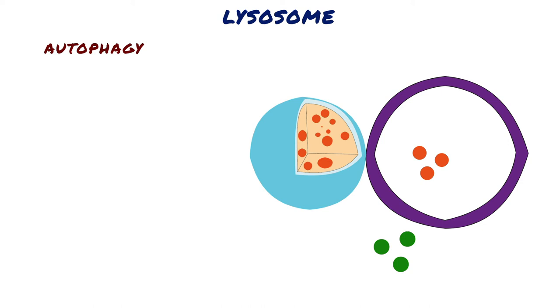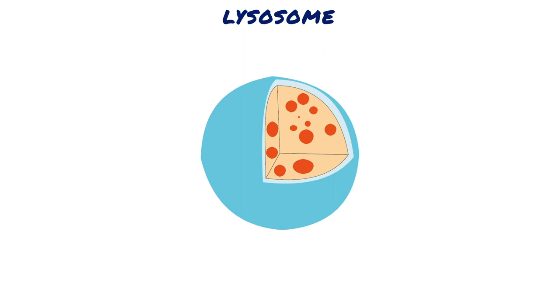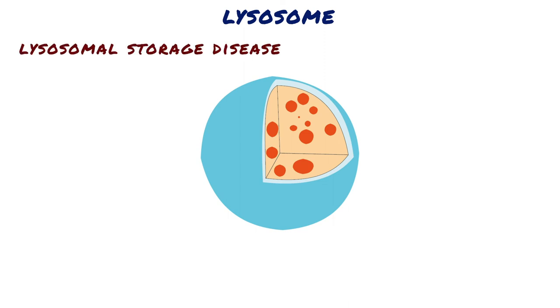A human liver cell, for example, recycles half of its macromolecules each week. The cells of people with inherited lysosomal storage diseases lack a functioning hydrolytic enzyme normally present in lysosomes.